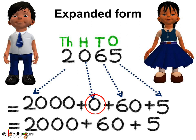See, there is a 0 at hundreds place. So, write it as 0 hundreds, 6 tens and 5 ones. So, 2065 is equal to 2000 plus 0 plus 60 plus 5 which is equal to 2000 plus 60 plus 5 as hundreds place is 0 here.